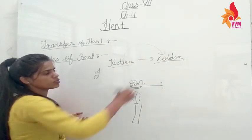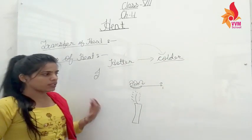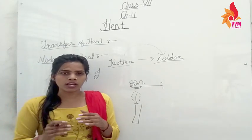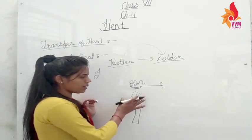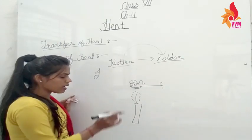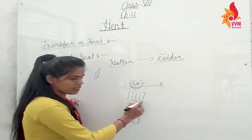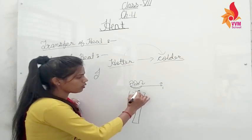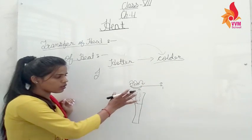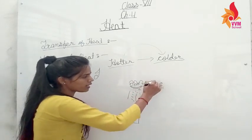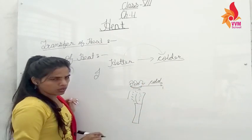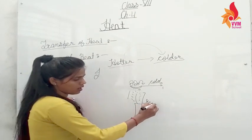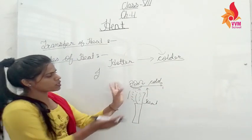From the hot object, the heat is transferred to the cold object. Like we have seen with the boiled water — here there is more heat, the spoon is cold, so the heat transfers from the hot object to the cold spoon.